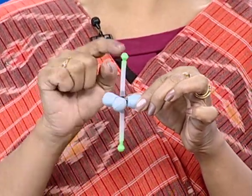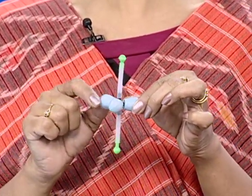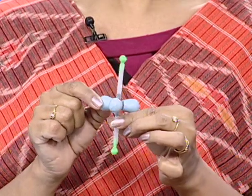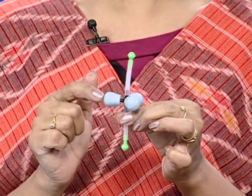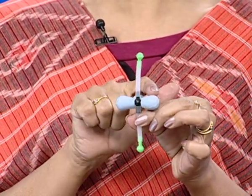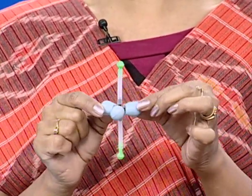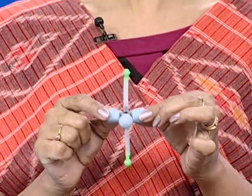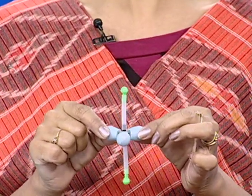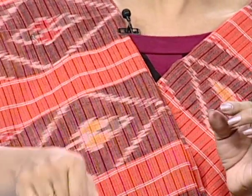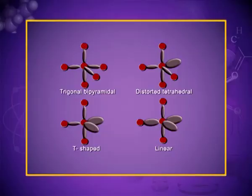When all equatorial positions are occupied by lone pairs, the molecule takes a linear shape. These are the distorted shapes possible within the trigonal bipyramidal geometry.